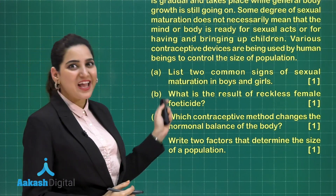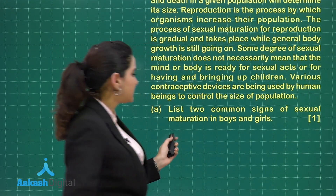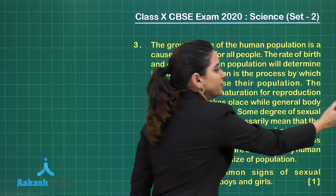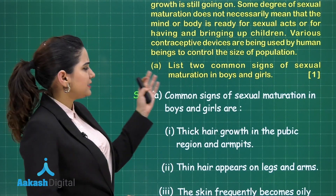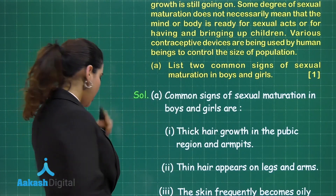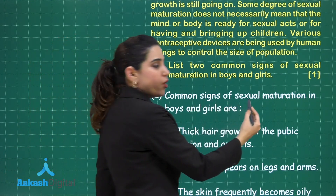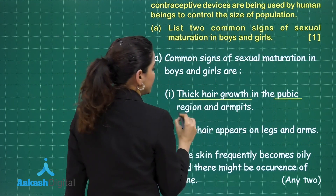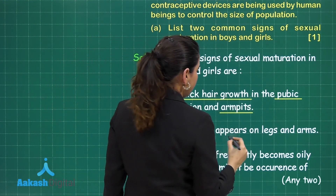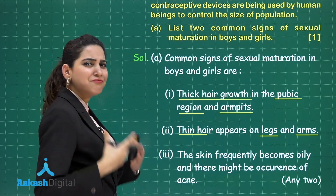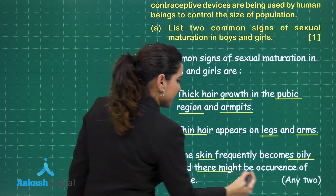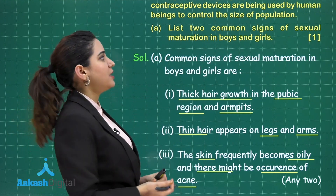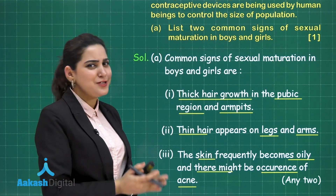Part A of question number 3 says: list two common signs of sexual maturation in boys and girls. It's for one mark and comes from the chapter 'How Do Organisms Reproduce?' The common signs of sexual maturation in boys and girls are: number one, thick hair growth in the pubic region and armpits; number two, thin hair appears on legs and arms; and number three, the skin frequently becomes oily and there might be occurrence of acne. You have to write any two of these correctly to get one good mark.